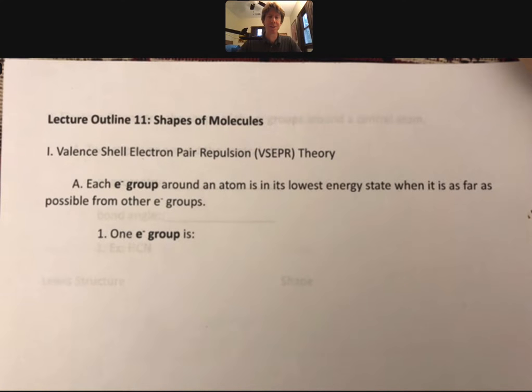So I'm going to define a term, this is specific to my class although I know some other classes use this: it's an electron group. Each electron group around an atom is in its lowest energy state when it is as far as possible from other electron groups.